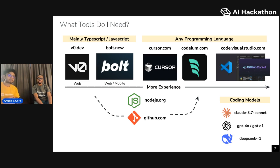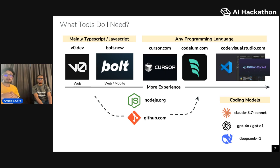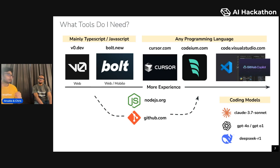Now, if you have some experience writing programming — maybe a year in university or high school, or maybe you're an expert professional — and you know you can work with basically any programming language, for those folks we recommend tools like Cursor, Codium, and VS Code, which are all really the same product underneath the hood. They all use different AI models and different AI features to power building experiences faster.